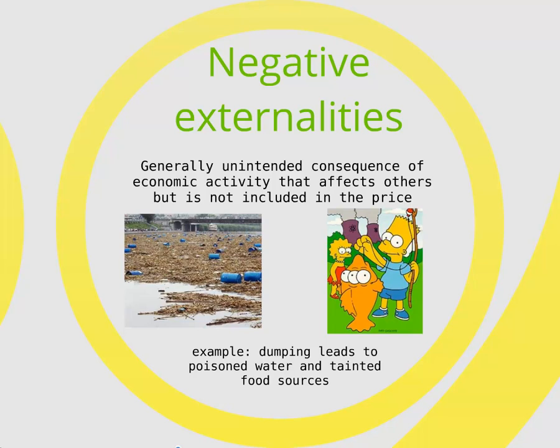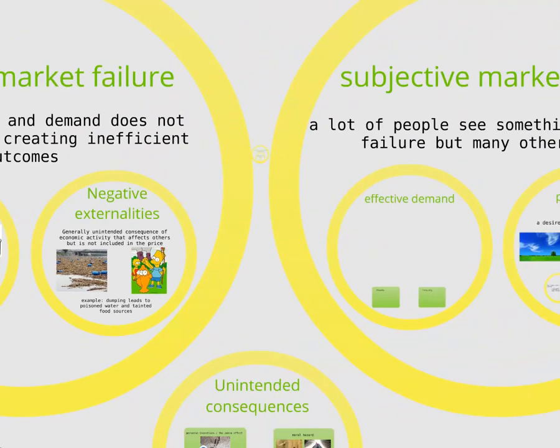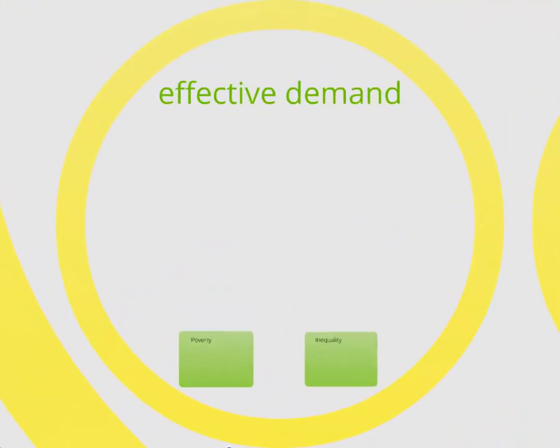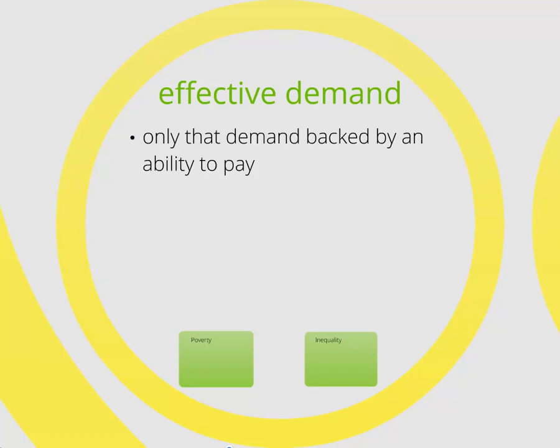Monopolies are bad situations however you cut it, unless of course you're a monopolistic firm. The same is true of negative externalities. However, there are a number of situations that are much less cut and dry — these are our subjective market failures. They might be a market failure in the eyes of some but not according to others. Many of these situations come down to the mismatch between demand and what economists call effective demand. Demand is the amount people are willing to pay, while effective demand is the amount that people are willing and able to pay — only that demand backed by the actual ability to pay.